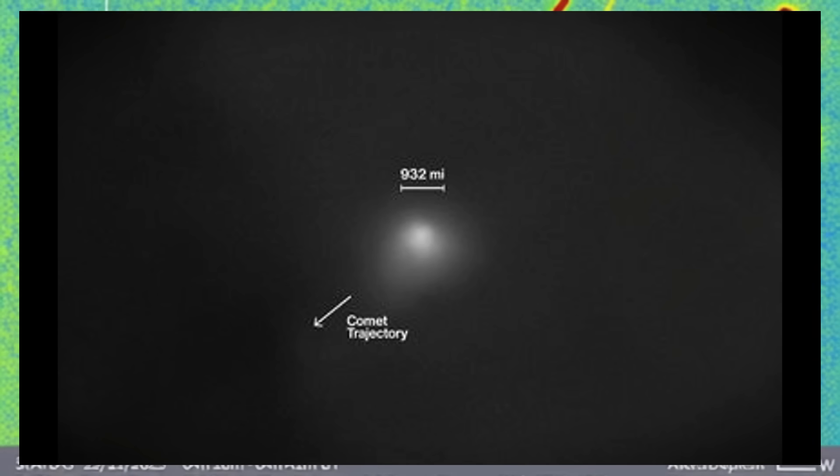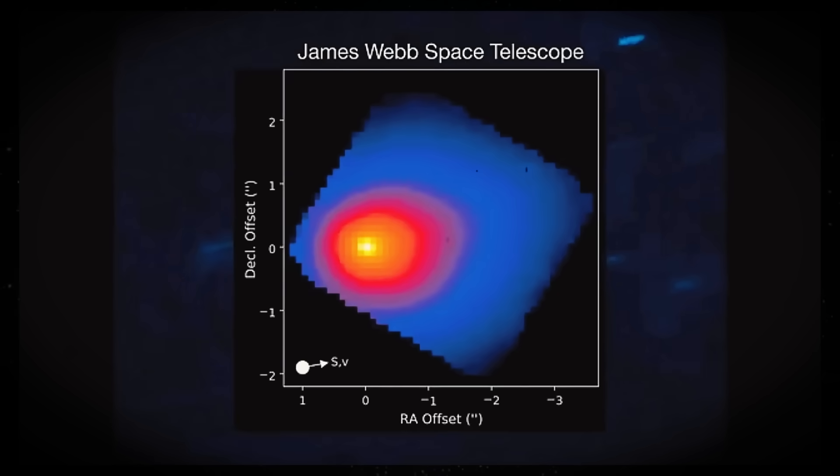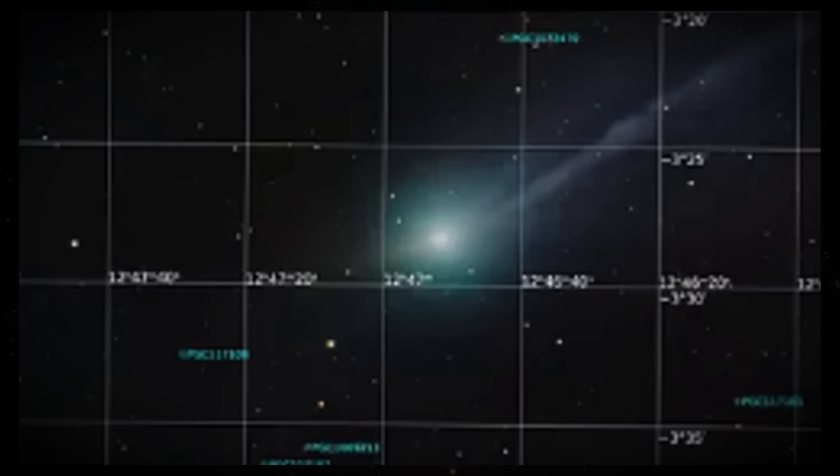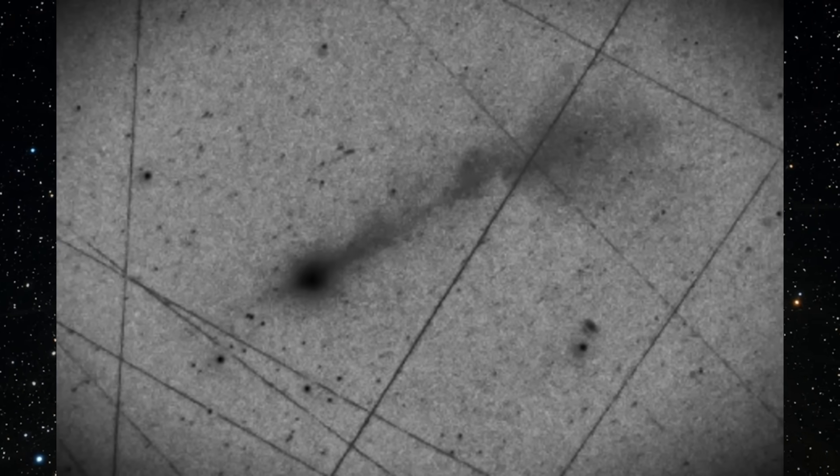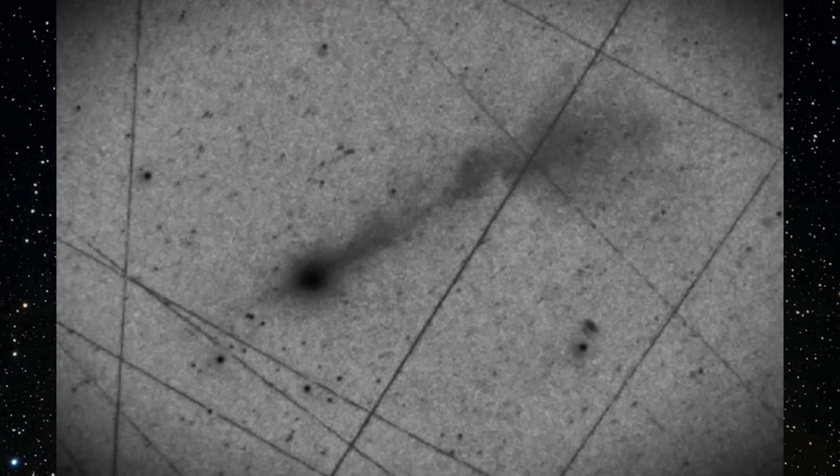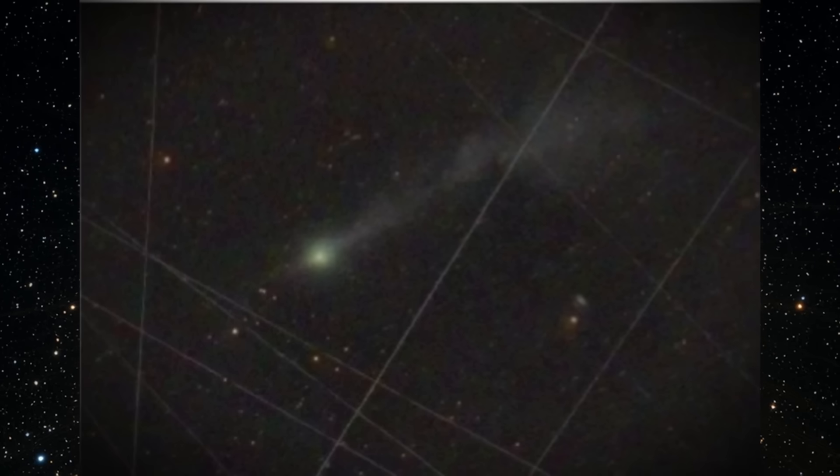If we're calculating something wrong, identifying and correcting this error would dramatically improve our ability to predict trajectories for all future interstellar visitors, potentially saving space missions and improving our understanding of solar system dynamics.